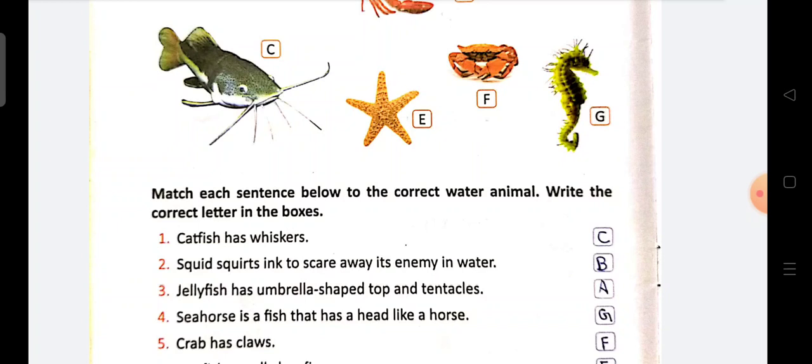But iska head ek horse ki tarah hoota hai. Isliye iska naam seahorse hai. But yeh ek fish hooti hai. Thik hai? Seahorse. Hamesha yad rakhye. Yeh ek fish hai. Lekin iska head horse ki tarah hoonay ki wajay se iska naam seahorse hai. Next point number 5.